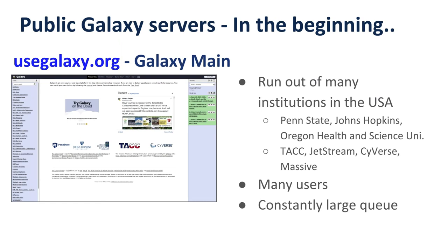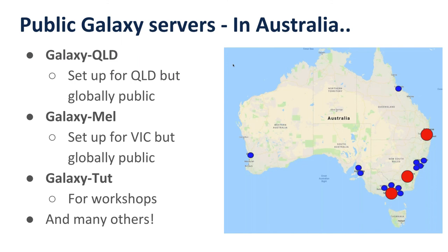So they decided that maybe more public servers would be handy, and we decided to create some new public servers in Australia. Probably about six years ago, when Galaxy was still in its infancy, we created Galaxy Queensland, then shortly followed by Galaxy Melbourne, and then Galaxy Tute which we use for running workshops. These Galaxy servers were set up in Melbourne and Brisbane to support those communities, but we soon found we were getting a lot of public access from other places around Australia and indeed around the world, so they became globally public Galaxy servers.